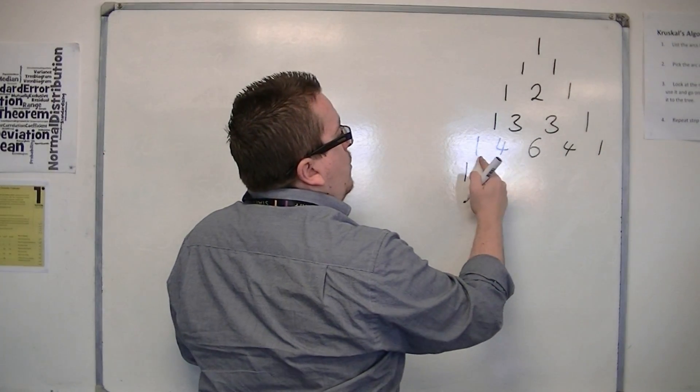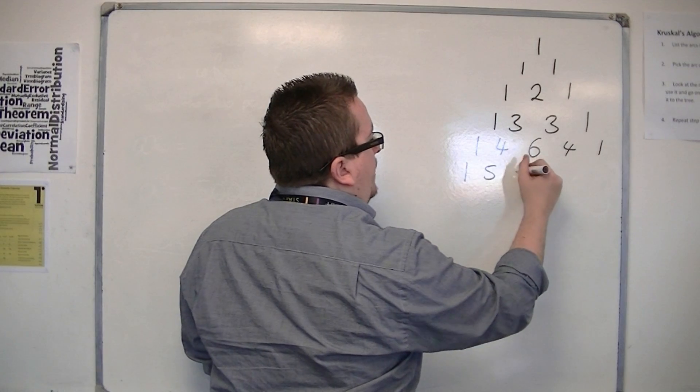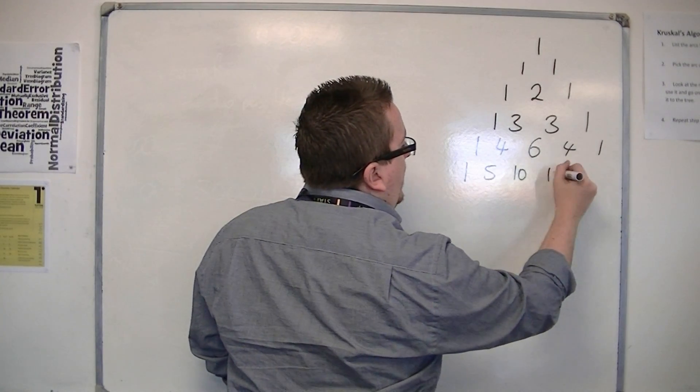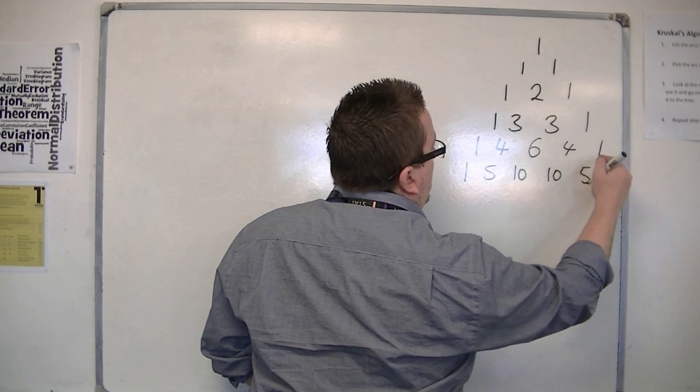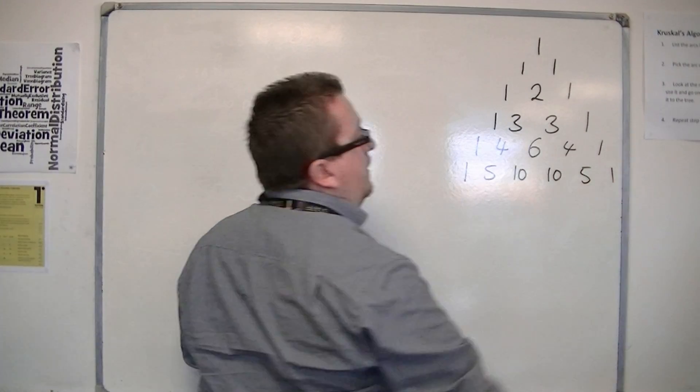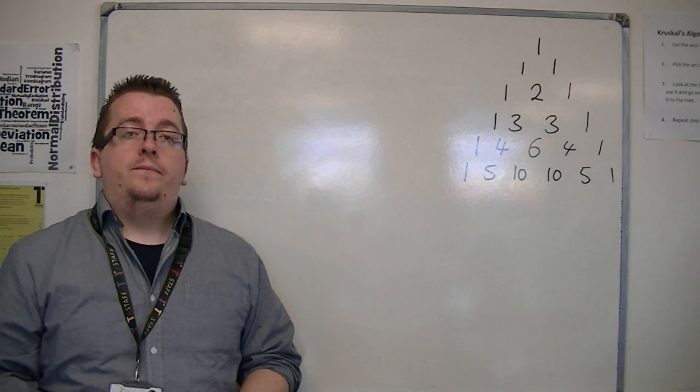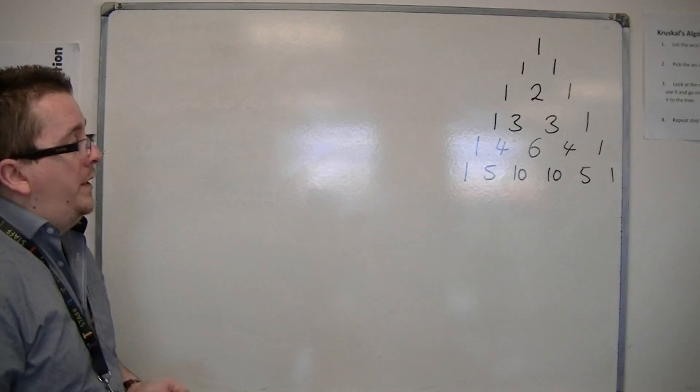The next row would be 1, 1 and 4 is 5, 4 and 6 is 10, 6 and 4 is 10, 4 and 1 is 5, and then 1. You can keep going with it. This is Pascal's Triangle.